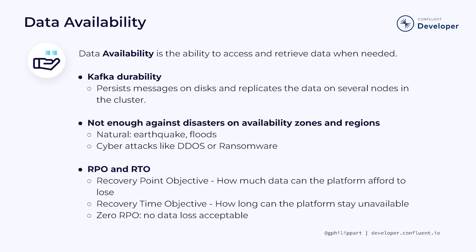We will talk about this in more detail in the Business Continuity module. RPO stands for recovery point objective and represents how much data the platform can afford to lose. RTO stands for recovery time objective and is how long the platform can stay unavailable. For example, an RPO of 10 minutes means that it's fine to lose up to 10 minutes worth of data — it could be orders being made by customers or sensor data. The term zero RPO means that no amount of data loss is acceptable. Now, let's have a look at a few tips for data availability.